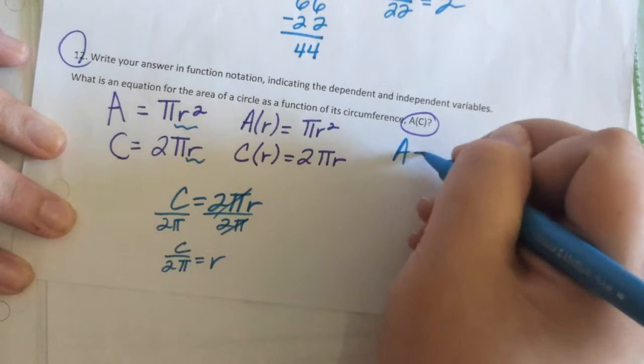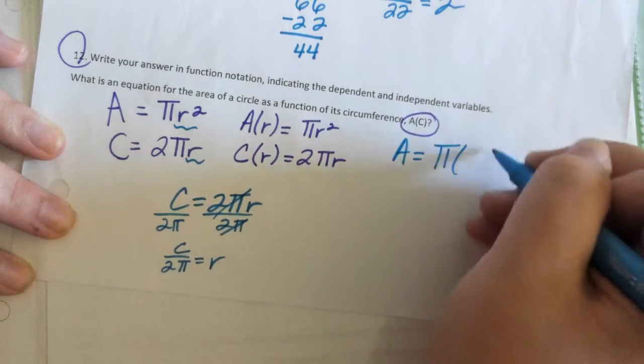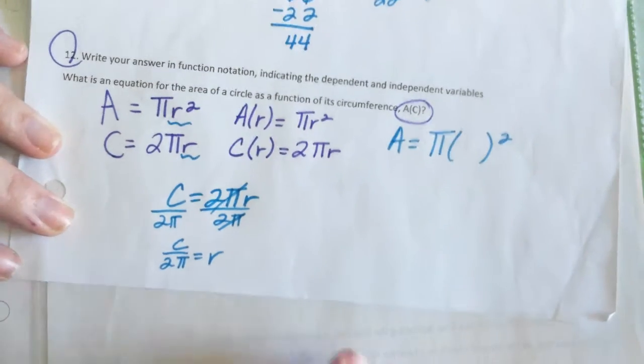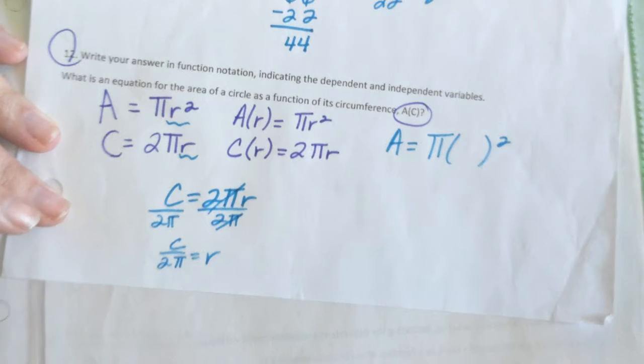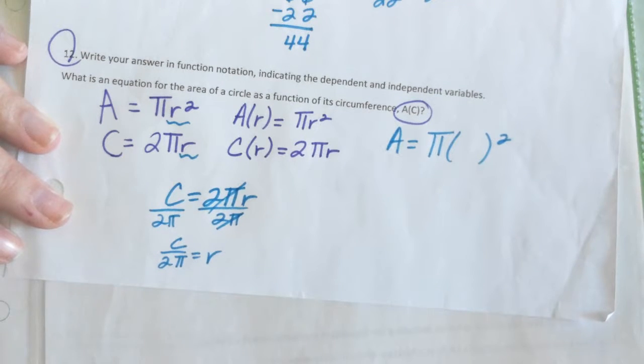So we used to have area equals πr². We used to. We're too cool for that now. Now, we don't want to have any r's. We only want to have C's. What can we plug in instead of r?